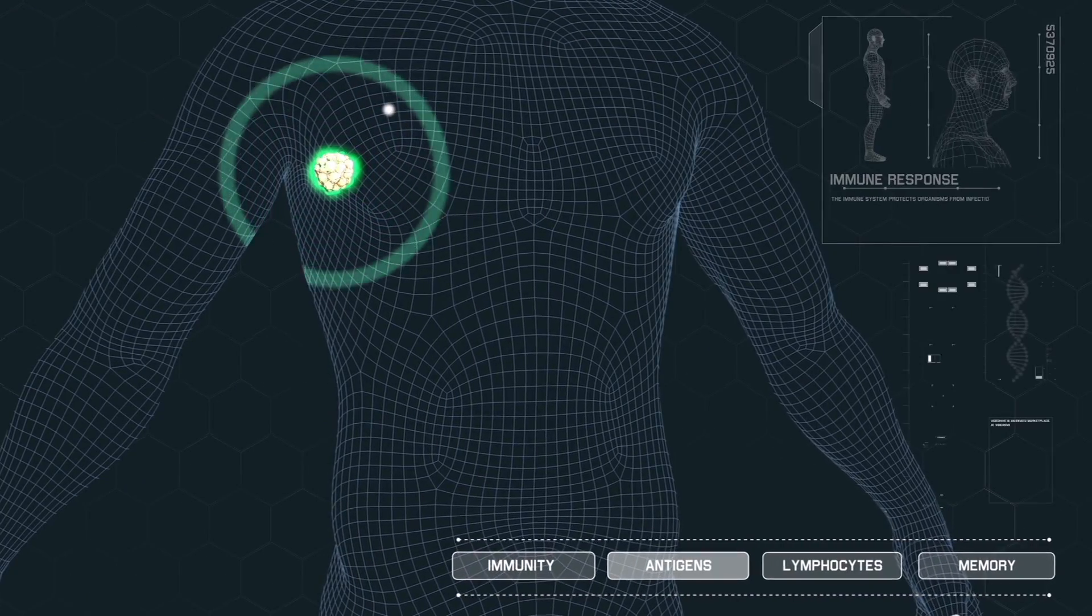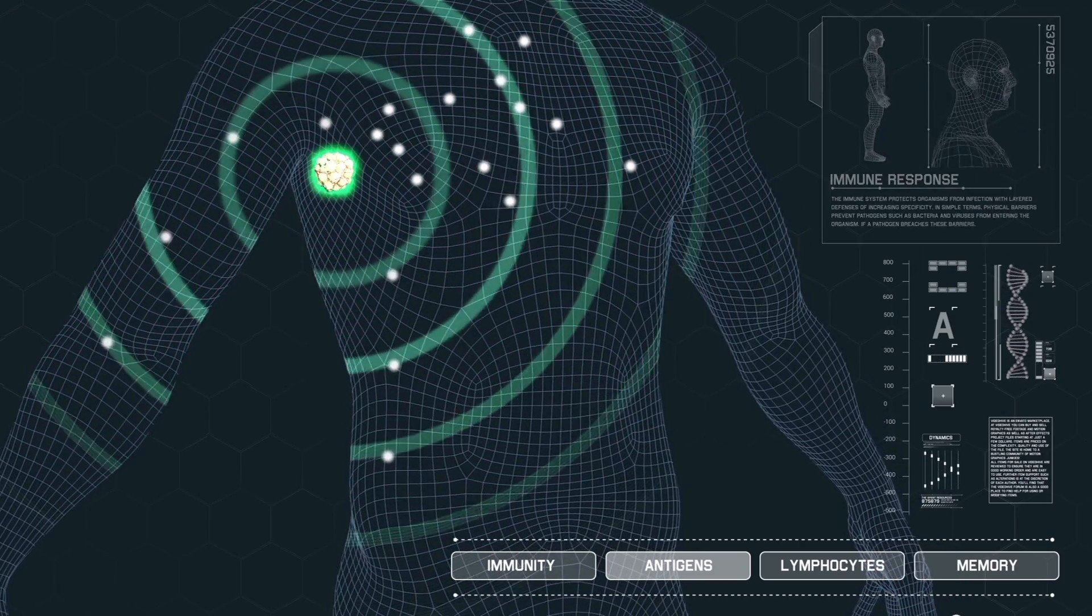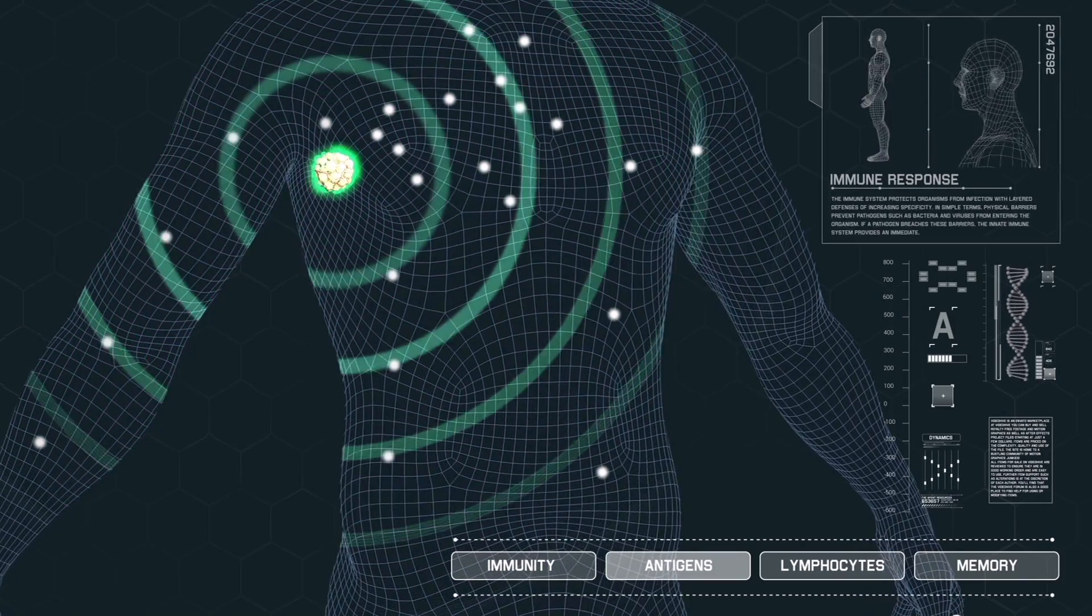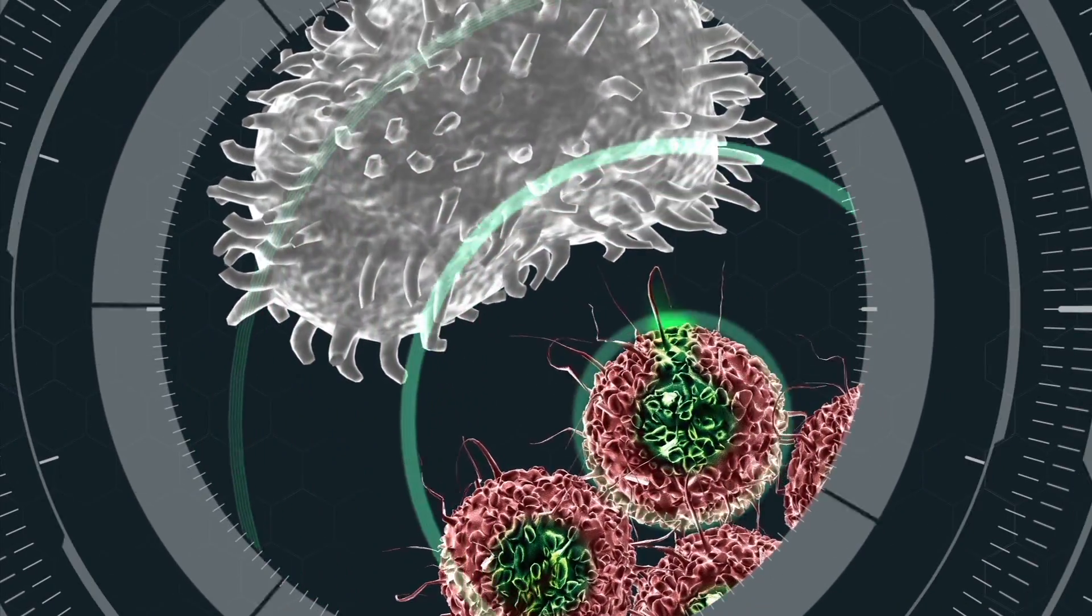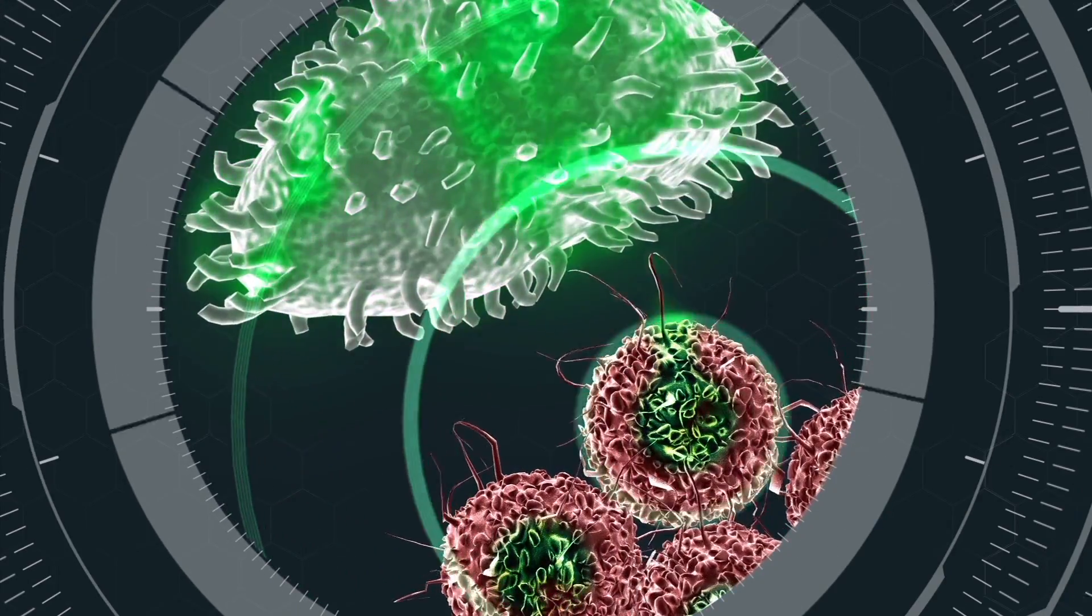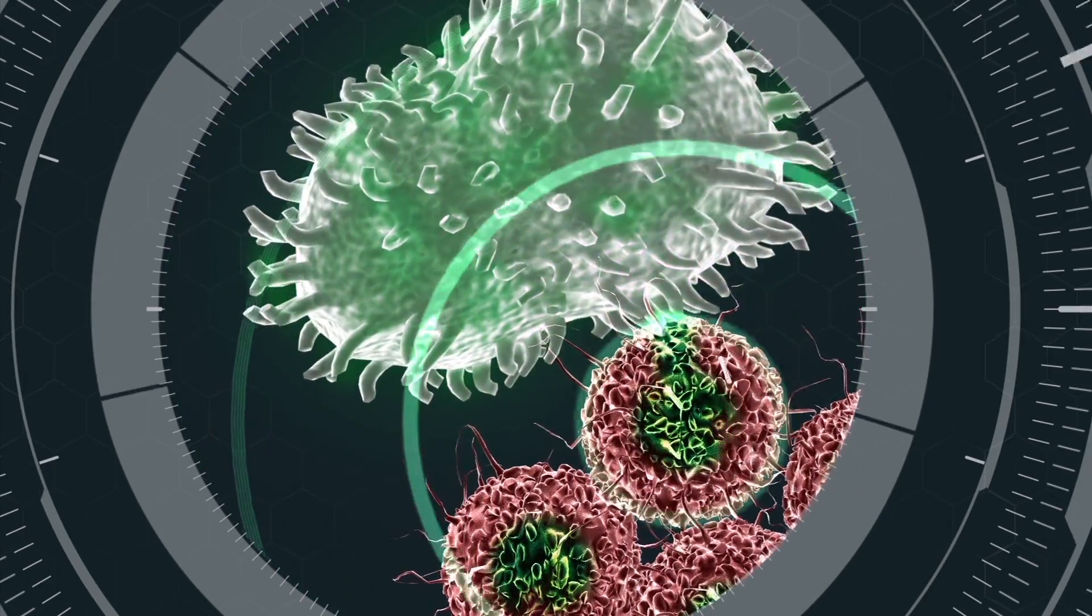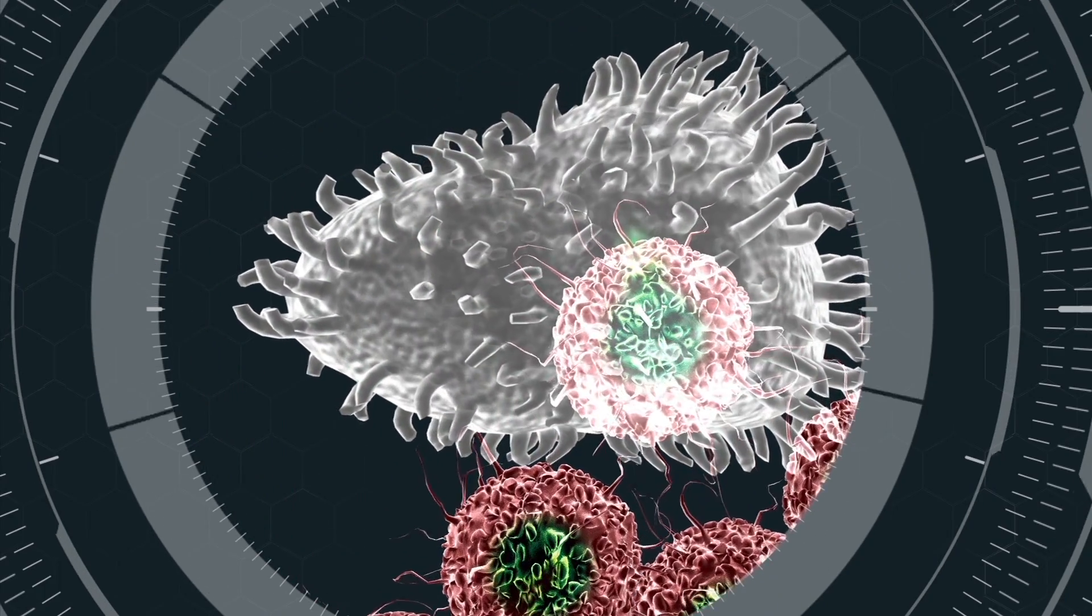Trillions of events are set into motion as the body's natural defenses now see the newly modified cancer cells as foreign invaders. First, cells within the body called antigen-presenting cells lock onto the signal being broadcast on the newly modified cell wall. They engulf and digest those tumor cells.